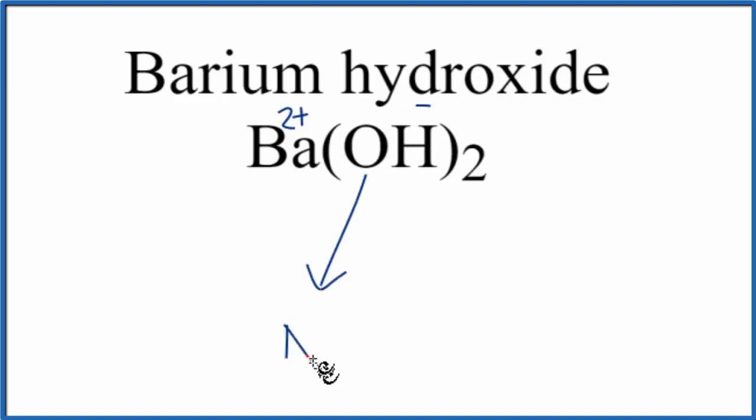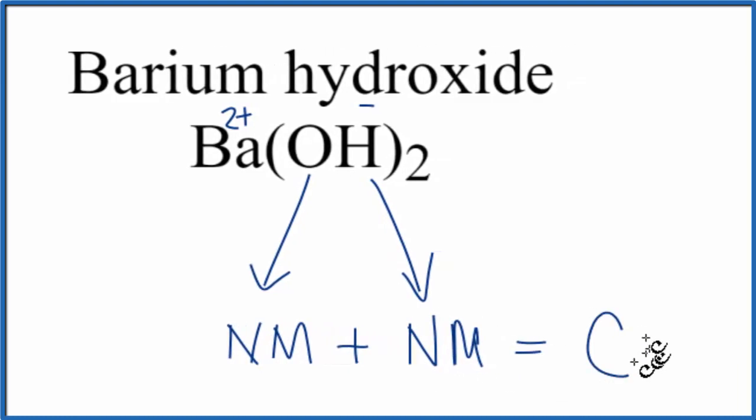the oxygen, we said that was a non-metal. The hydrogen, we said, is also a non-metal. So if we have a non-metal and a non-metal, that is a covalent or molecular compound. So the bonds between the oxygen and the hydrogen in this polyatomic ion, in this hydroxide ion, they're covalent bonds.